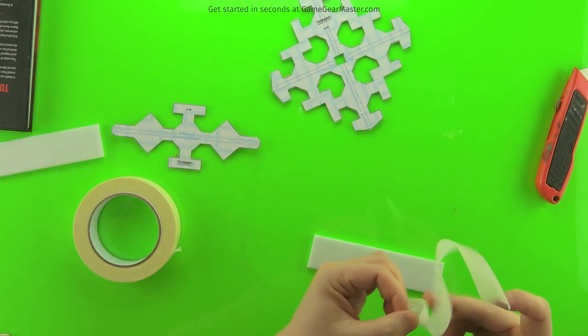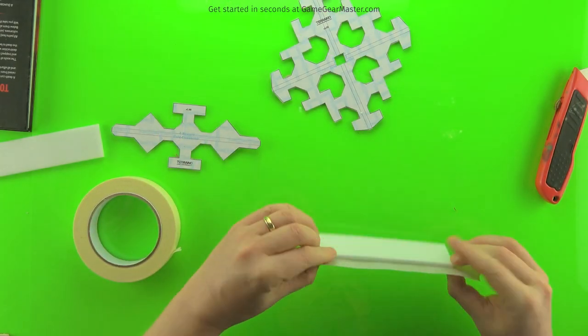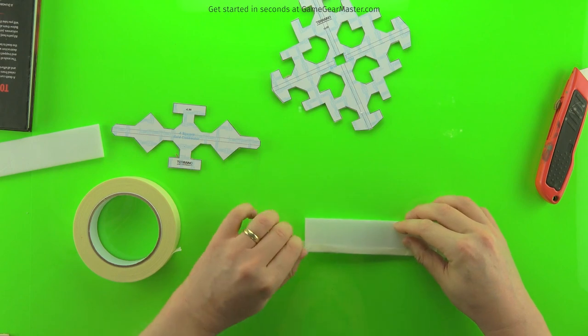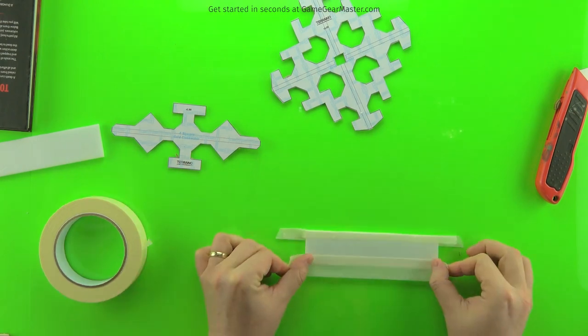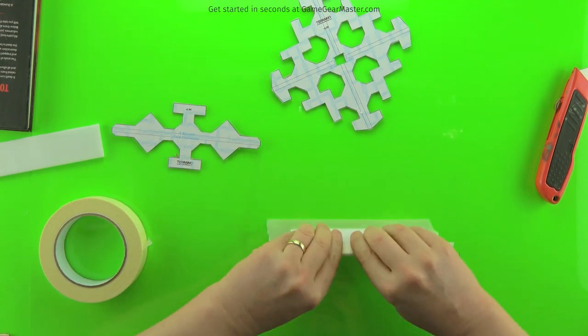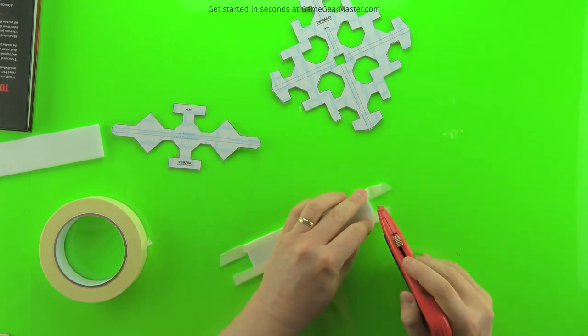So here I'm making the single sheet depth cutter. You may be familiar with these depth cutters if you've made clip-ons in the castles and catacombs manual. But if not, I'm going to show you how to make one here. It's just a single sheet of foam board wrapped in masking tape.